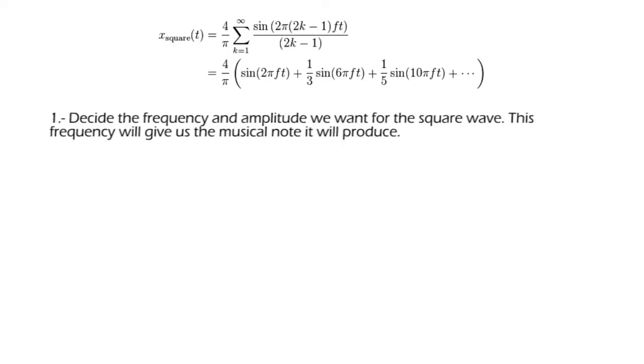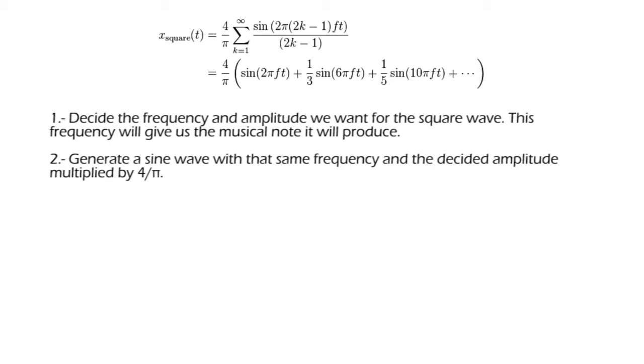The procedure is the following. Decide the frequency and amplitude we want for the square wave. This frequency will give us the musical note it will produce. Generate a sine wave with that same frequency and the decided amplitude multiplied by 4 divided by pi.